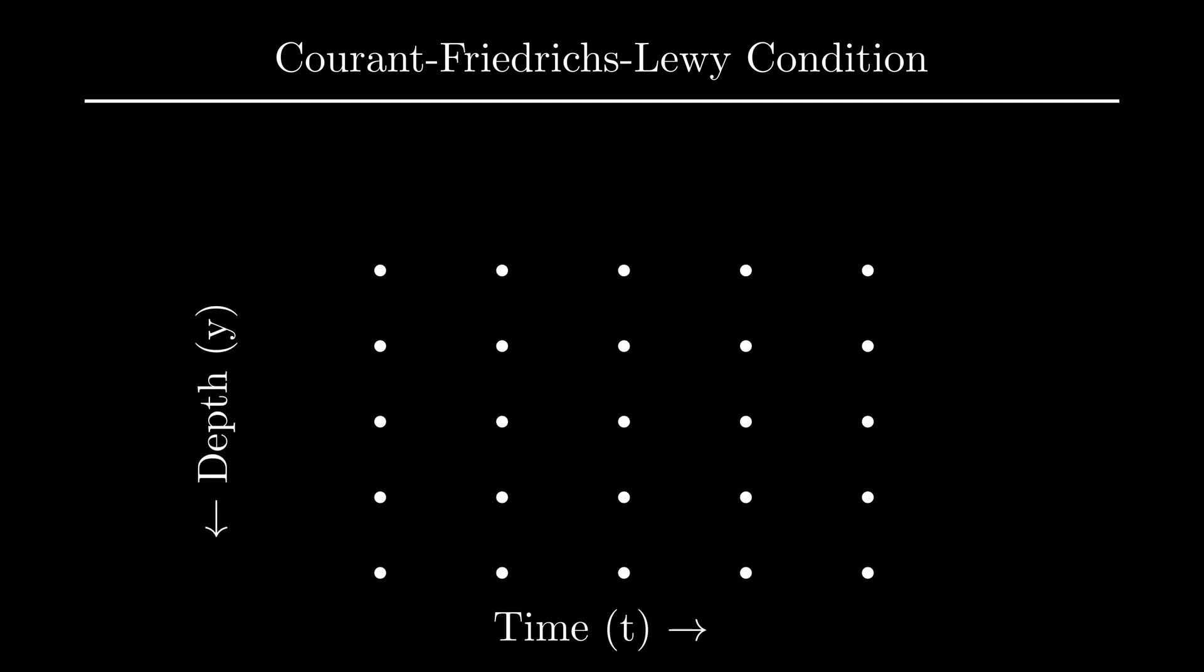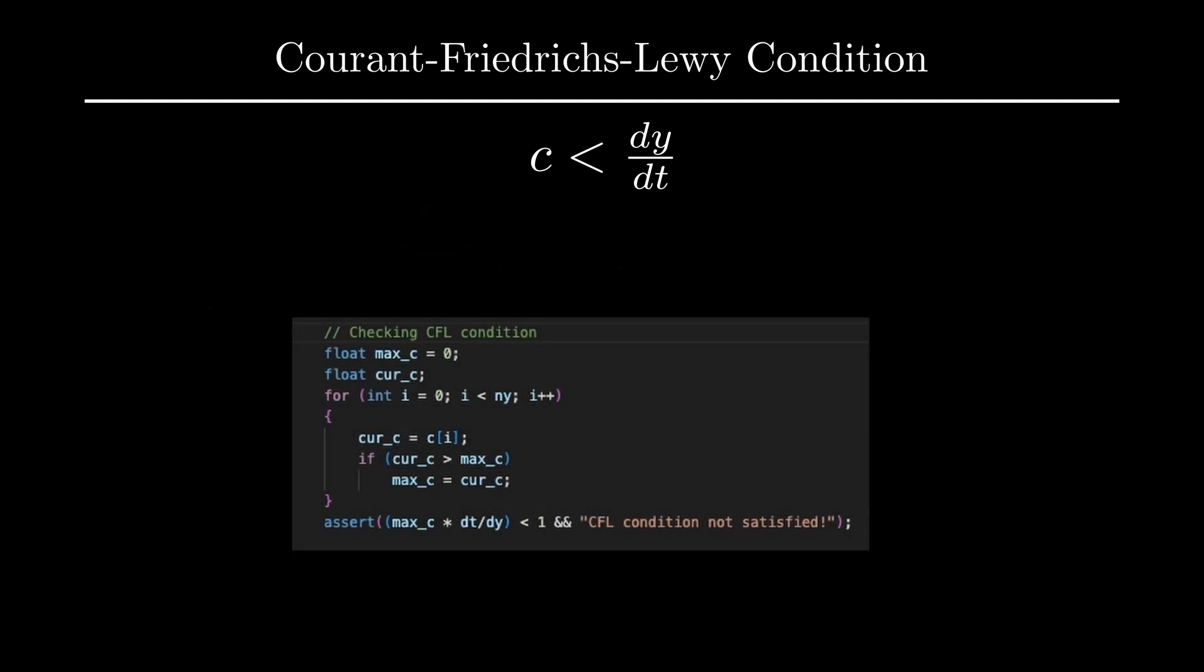When I discretized the domain into finite points, I set the value between two consecutive points in time and space as dt and dy. The discretization implies that the maximum speed at which the information can propagate through the grid is dy over dt. CFL condition states that the medium velocity c must not exceed this. I added a simple CFL condition check in the simulation code so that the user can be warned. It is important to note that for a heterogeneous medium, I must check the CFL condition against the highest velocity.